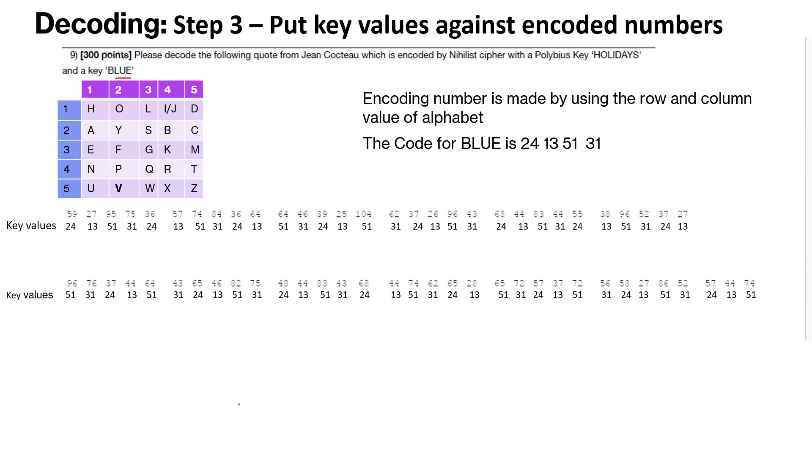And the next step here would be to subtract the key value from the encoded value. So we will have another row out here for subtraction. And so 59 minus 24 would be 35, 27 minus 13 would be 14. So we go ahead and start populating those values.